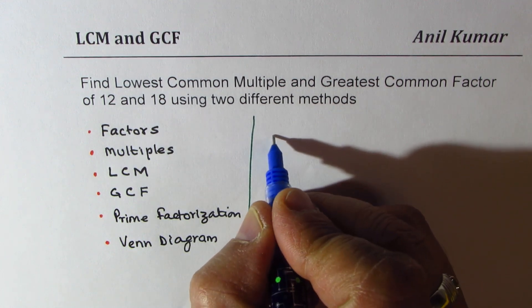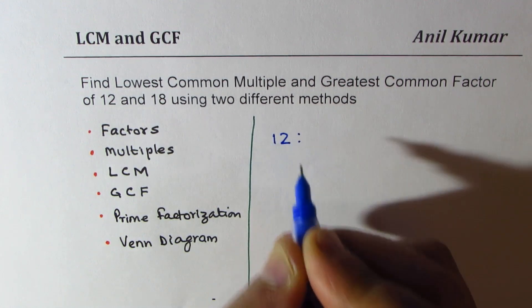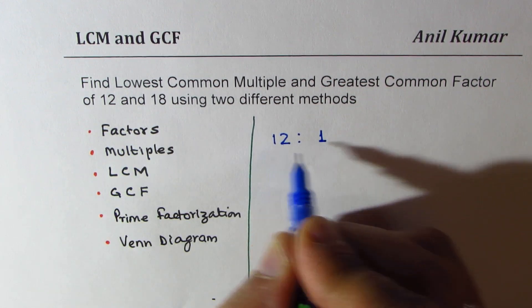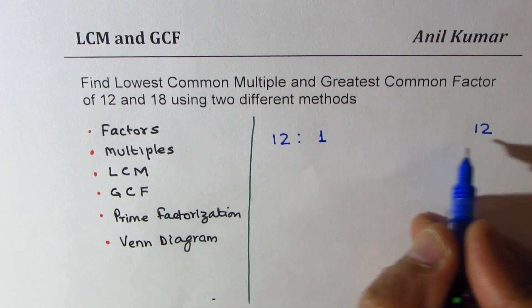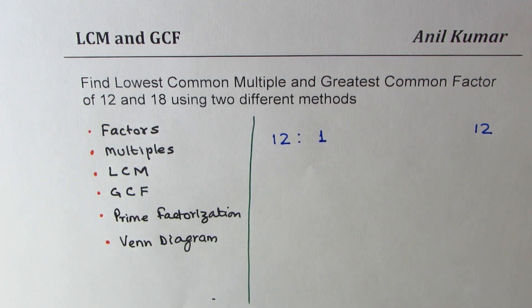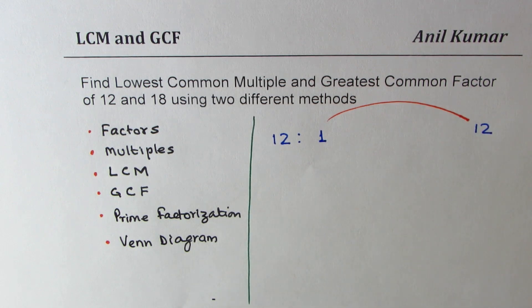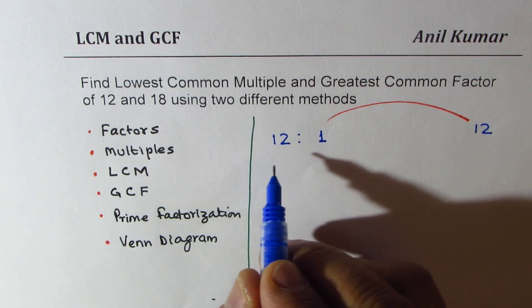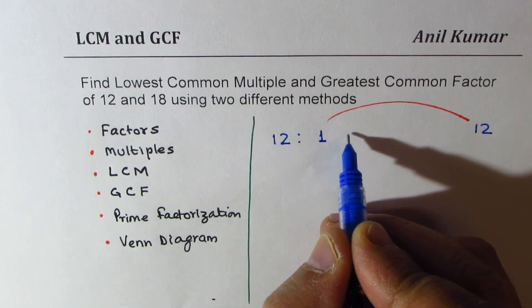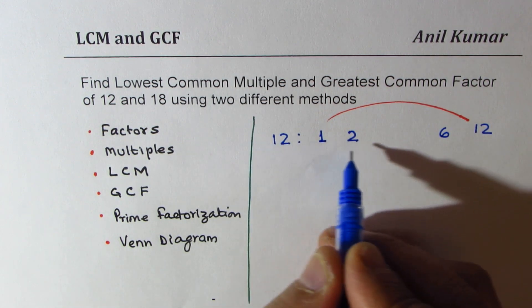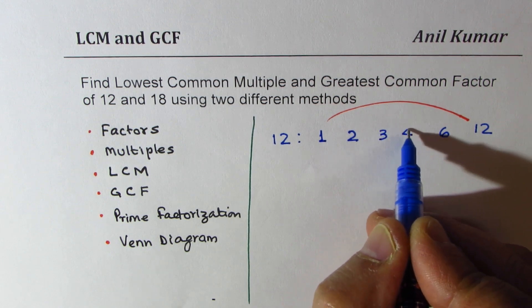Let's begin with 12. To find the factors, always one times the number itself will give you the number, so these two are always factors. Prime numbers will have two factors, however composite numbers like 12 and 18 will have many factors. It's an even number so I could divide it by 2: 2 times 6 is 12, and 3 times 4 is also 12. So we get six factors for 12.